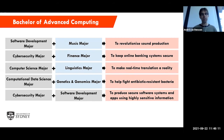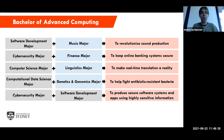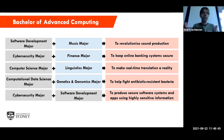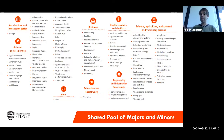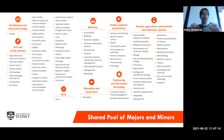For example, if you take the cybersecurity major and combine it with the finance major from the business school, you might end up with a job keeping banking systems or the stock exchange secure. You can also do things like take the computer science major and combine it with linguistics if you want to work on something like real-time translation. There are basically an innumerable number of combinations here, given the wide range of majors available across the university.